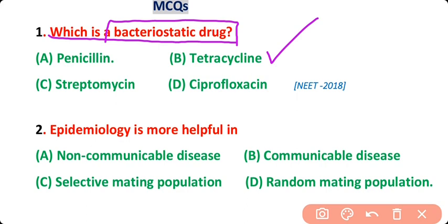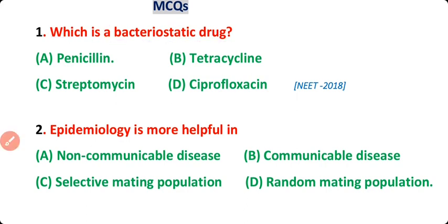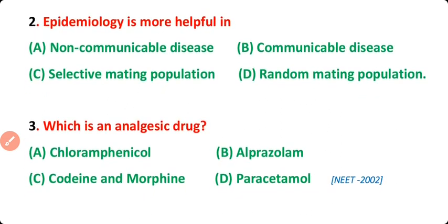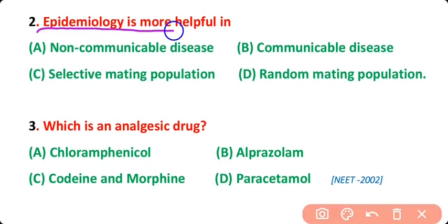Bacteriostatic drugs are those drugs that inhibit the growth of bacteria. Question number 2: Epidemiology is more helpful in non-communicable diseases, communicable diseases, selective mating populations, or random mating populations? Correct answer is option B. Epidemiology is a branch of medicine that deals with the control of diseases and it is more helpful in communicable diseases. Communicable diseases are those diseases that can be transferred from one person to another.